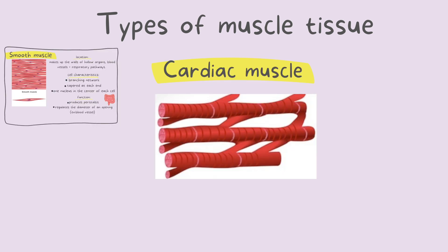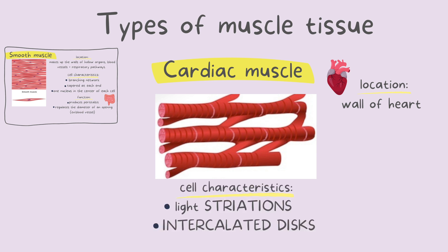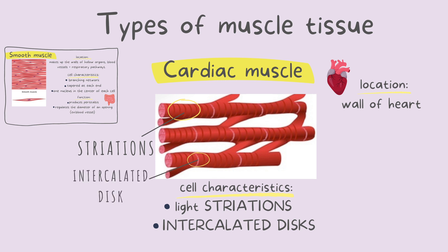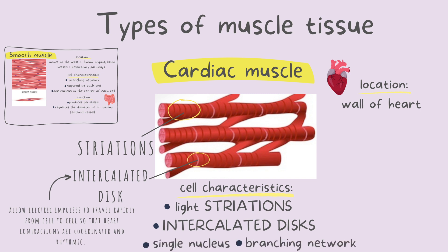Next we have our cardiac muscle. This is found in the wall of the heart. The most important characteristic to remember here are the intercalated discs, and secondly, the striations. The striations are seen more abundantly, and the intercalated discs are further spread apart from each other. The intercalated discs not only attach the cells to another cell, but they also allow electrical impulses to travel rapidly from one cell to another, so that the heart contracts more coordinated and more rhythmically. These intercalated discs are only found in the cardiac cells. Other characteristics include a single nucleus and a branching network.